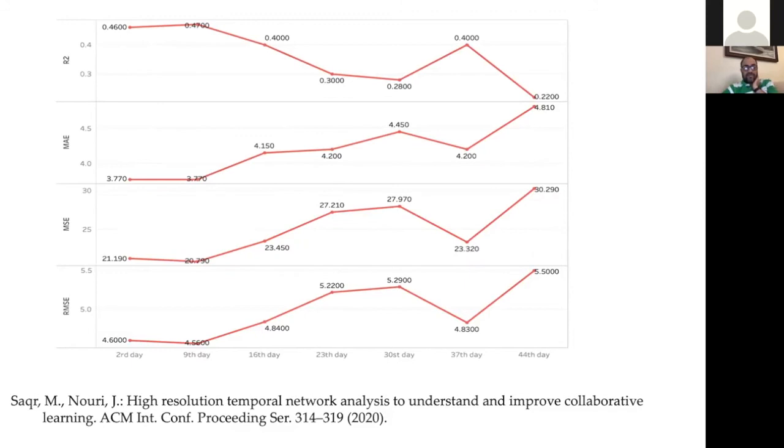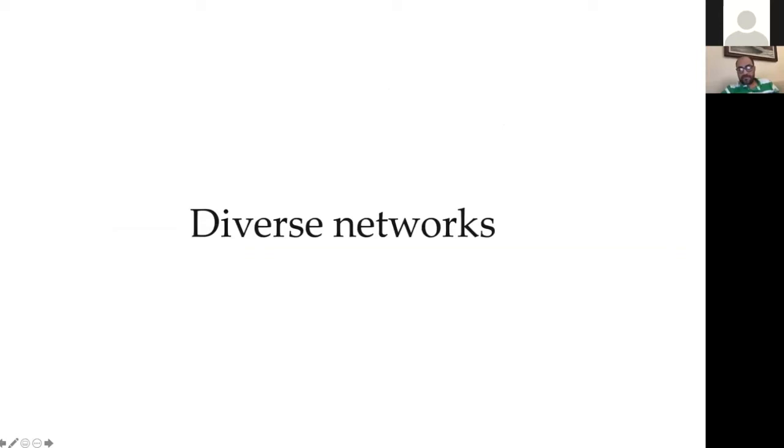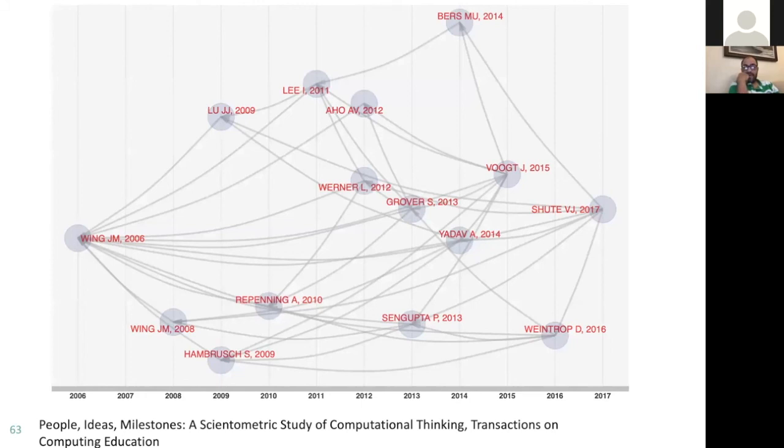Then some diverse networks. This is one historical citation network among papers that an article we are about to publish in transactions and computing education showing up the history of computational thinking. It is, of course, started as many of us know after Janet Wing article about the concept in 2006, which she followed by another article in 2008. And people started, you know, interacting with the idea and it became a concept now. With this network we can simply understand how a whole field developed and grown and happened. So it's a temporal network. And again, citation network.